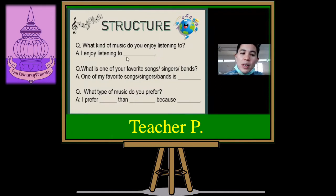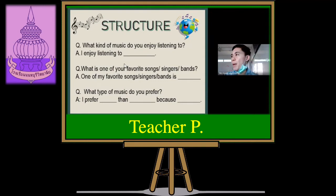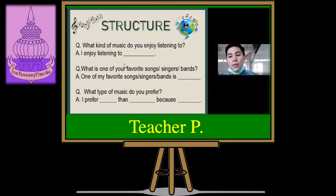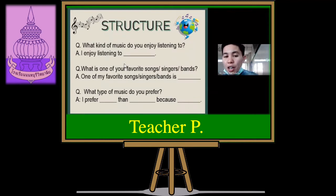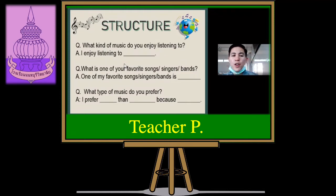Now we have our structure. Question one: 'What kind of music do you enjoy listening to?' You answer: 'I enjoy listening to reggae / hip-hop music / country music.' Question two: 'What is one of your favorite songs, singers, or bands?' You choose either of the three.